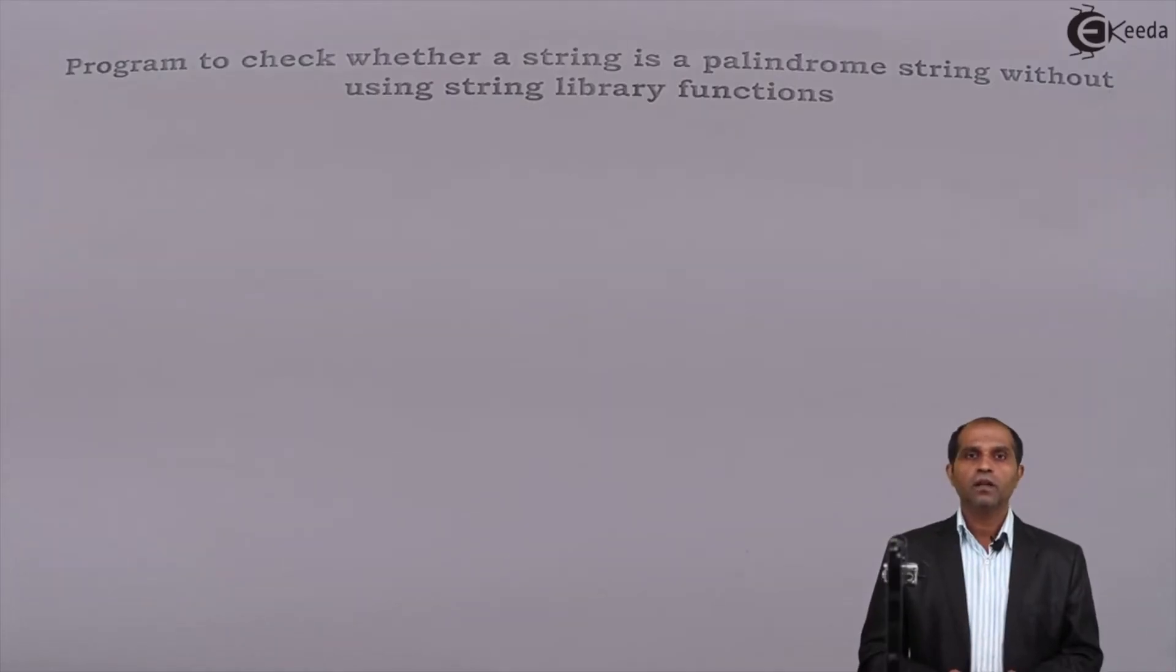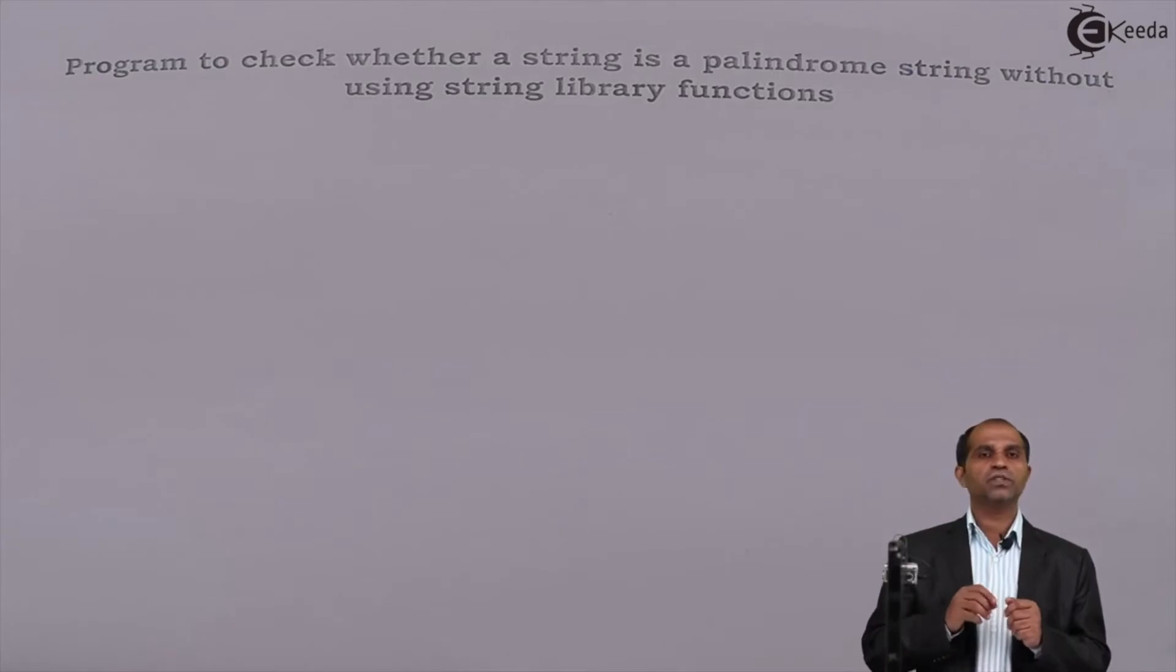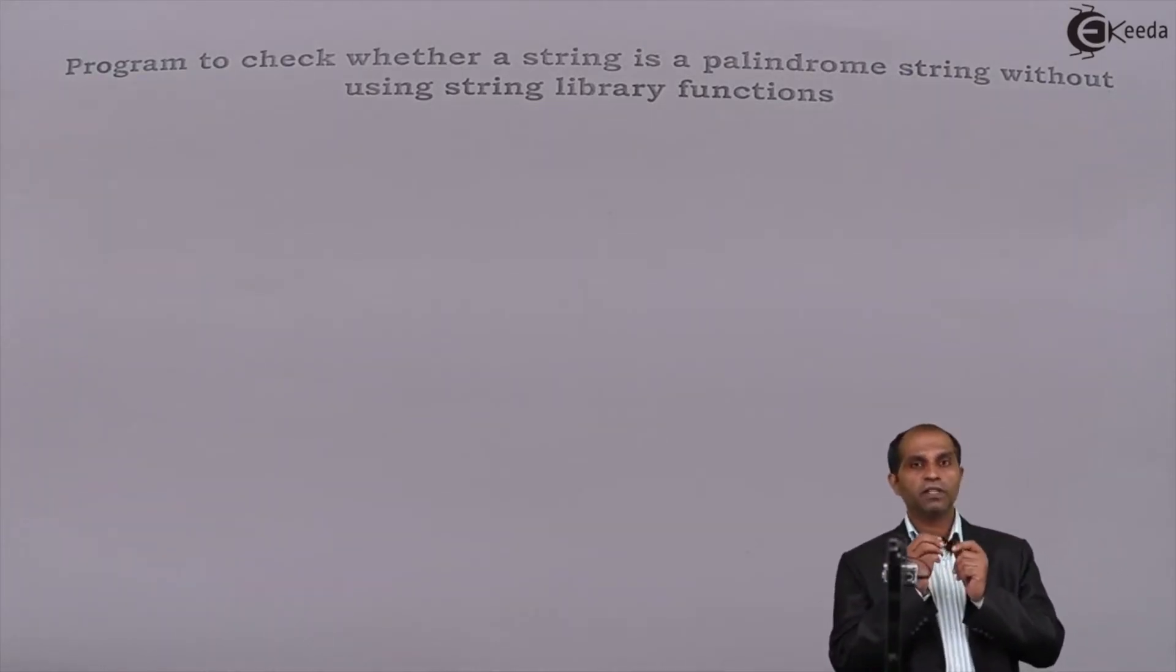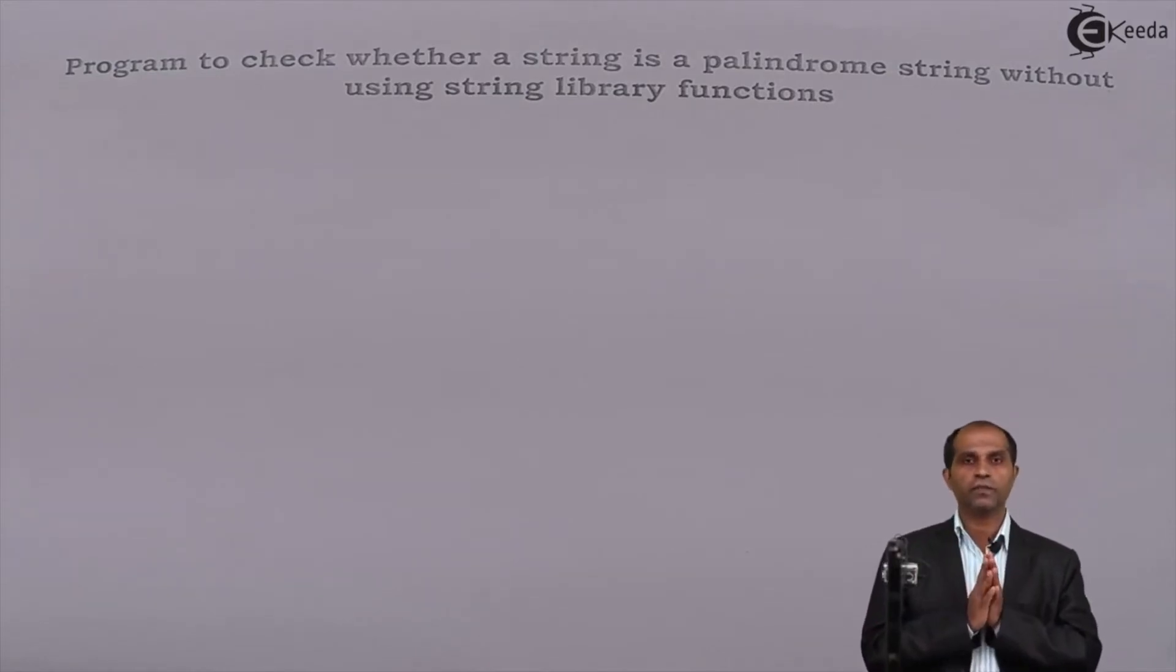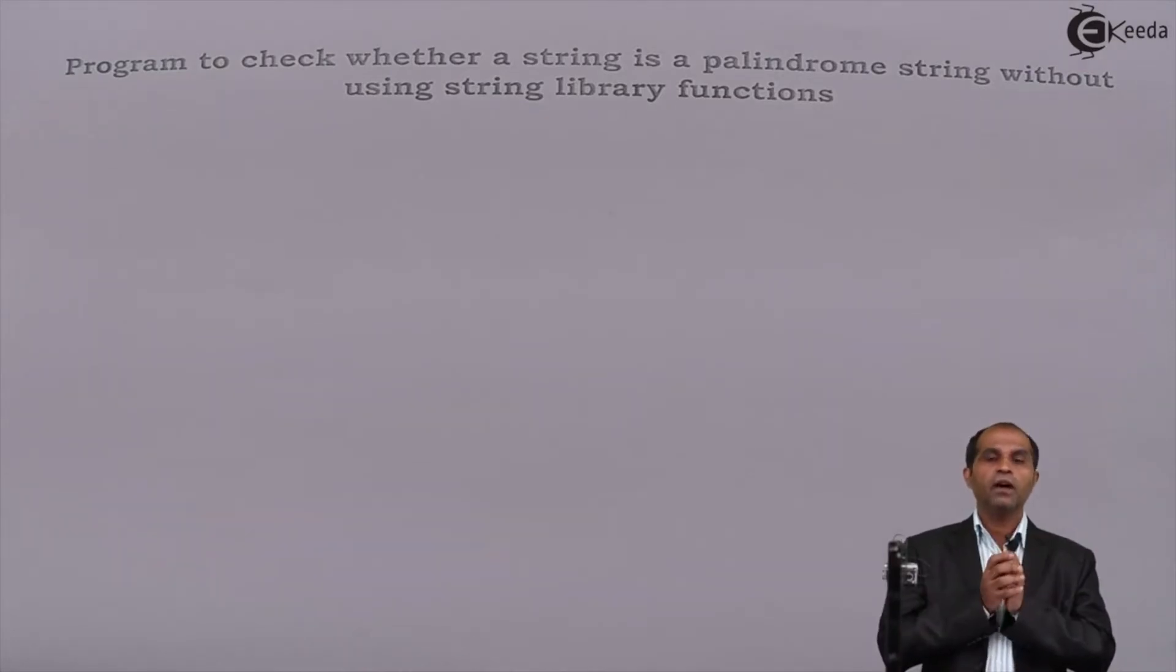Hello friends, let's try one more time the string palindrome function, but this time I'll not use even a single library function of string.h. In some exams it has been clearly stated that you are not supposed to use an additional array and neither you are supposed to use a string library function. Now how to do this?